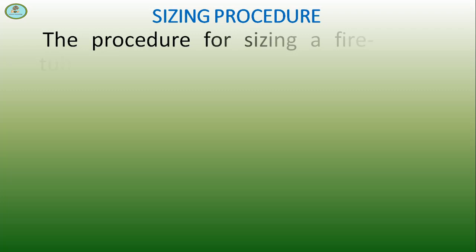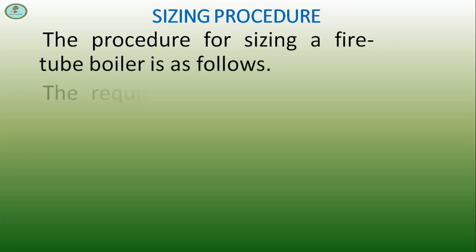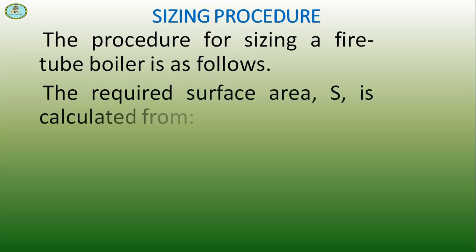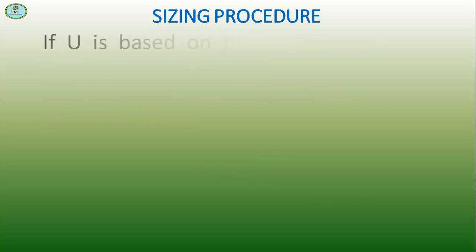The procedure for sizing a fire tube boiler is as follows: the required surface area S is calculated from this equation: S = Q / (U × ΔT). This is equation 1a. If U is based on the tube outer diameter, then the surface area is also based on the tube outer diameter.